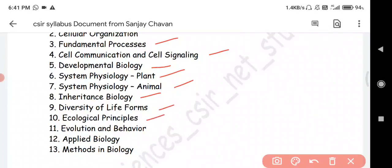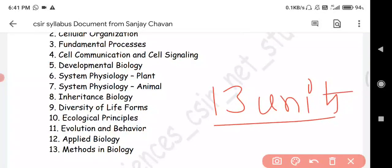Diversity of life forms, ecological principles, evolution and behavior, applied biology, and methods in biology. So these 13 units are covered in the CSIR UGC life sciences examination.